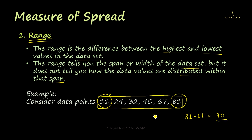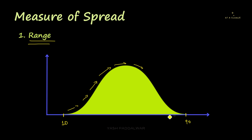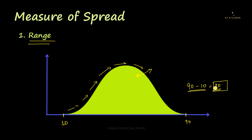Now let's look at range in a distribution plot. Let's say we have a normal distribution starting at a lower value of 10 and ending at a higher value of 90. The range is highest minus lowest — 90 minus 10 equals 80. Every single value in this distribution will be lying within this range from 10 to 90, and the width of this data set is 80. That is the range.